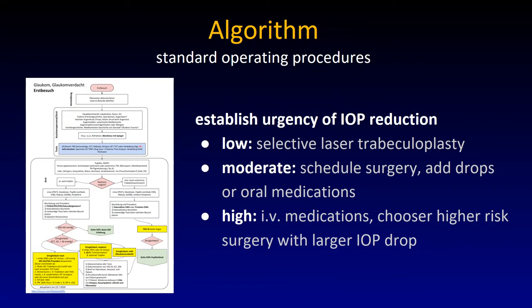Many clinics have developed an algorithm — a flowchart that standardizes care. The most important part of any algorithm in glaucoma care is: how urgent is the pressure? Is it somewhat low? Can you plan on doing a laser trabeculoplasty that takes at least a couple of weeks to work significantly? Should one use eye drops to get an immediate effect? Drops are oftentimes not the answer — they can be expensive and have systemic side effects, but at least they work right away.